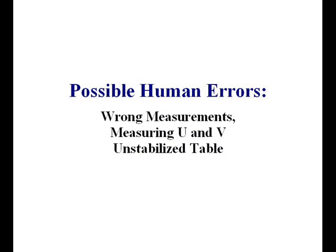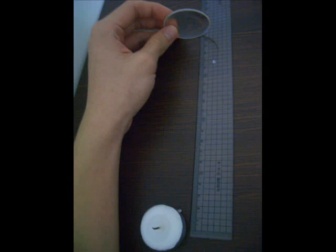Possible errors that occurred in our experiment can be due to human errors. For instance, our graph shows an empty spot on certain points. In other words, we were not careful in measuring all possible areas for the experiment. As a result, errors are due to human errors such as measurement errors when measuring the length of U and V.